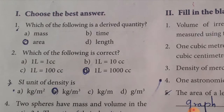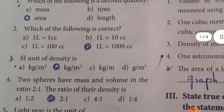Choose the best answer. First one: which of the following is a derived quantity? Answer: option C — Area. Second one: which of the following is correct? Answer: option D — one liter equals one thousand CC, where CC means cubic centimeter. Third one: the unit of density is option B — kilogram per meter cube.